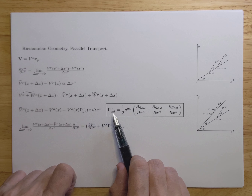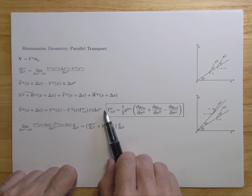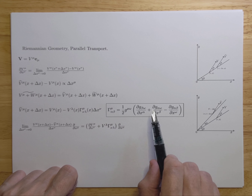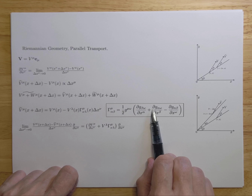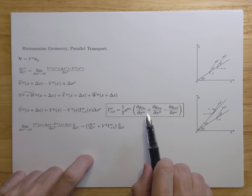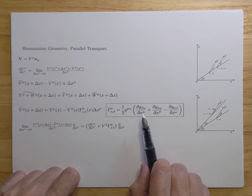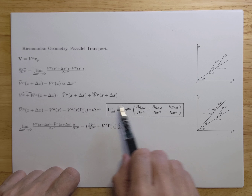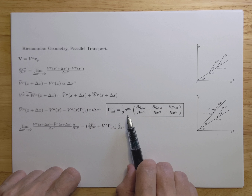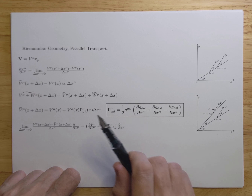For completeness, I give you the definition of Christoffel symbols, which I'm not going to use today — I'll derive this in a different video. But just for completeness, you can see that they only depend on the metric.